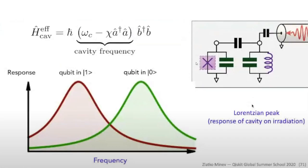This cavity — the harmonic oscillator — essentially reduces the charge noise. Instead of energy just passing directly through, it must go through the harmonic oscillator, which acts as a damping element for noise, protecting the qubit both from energy leaking out and from noise coming in from the environment.